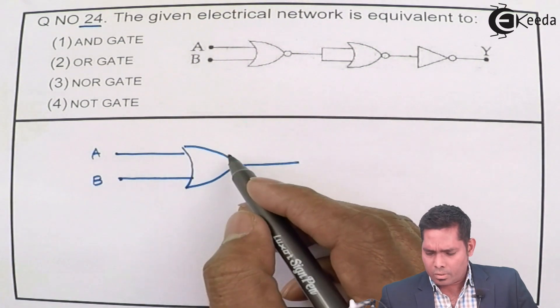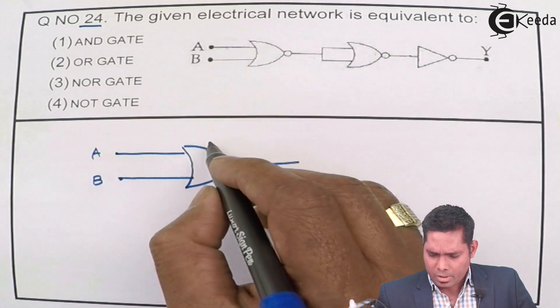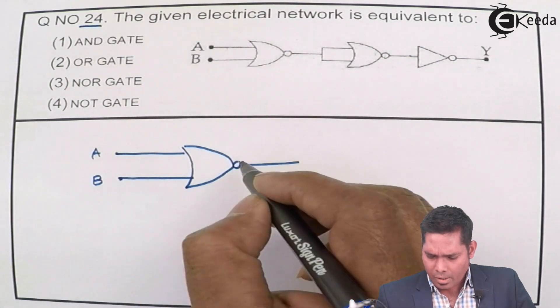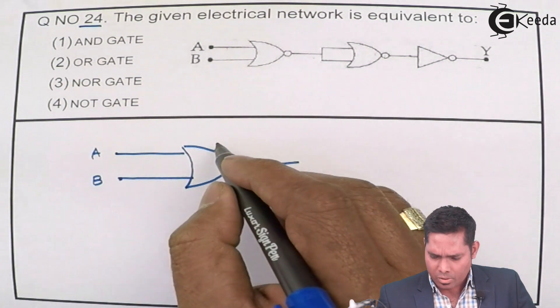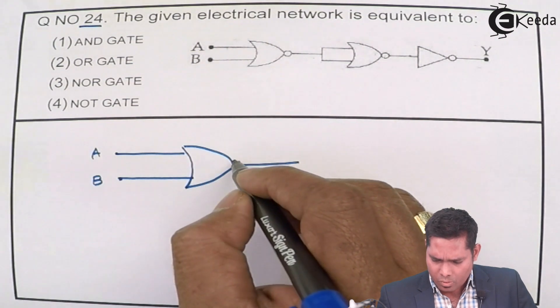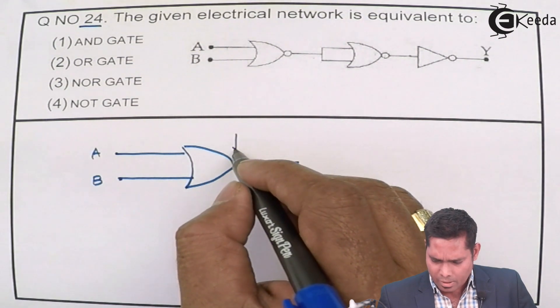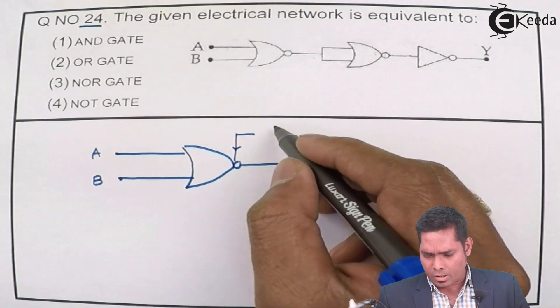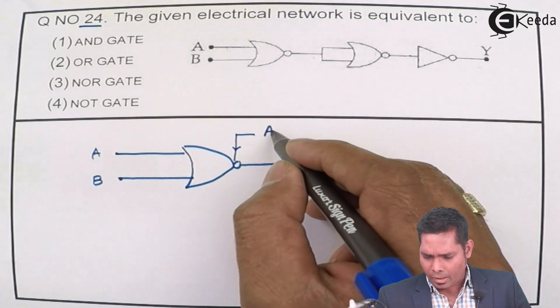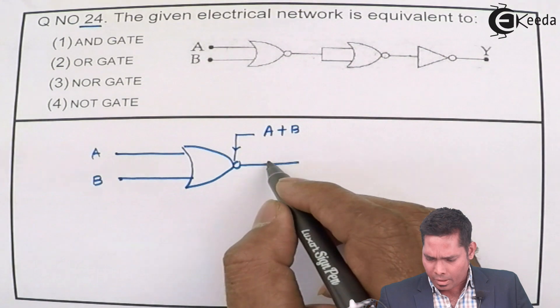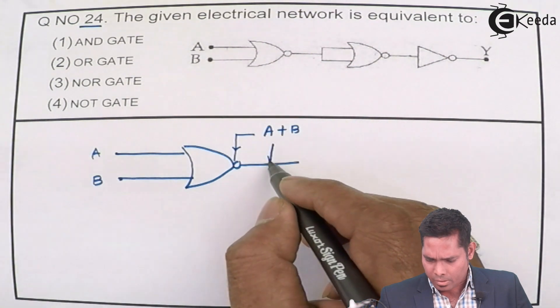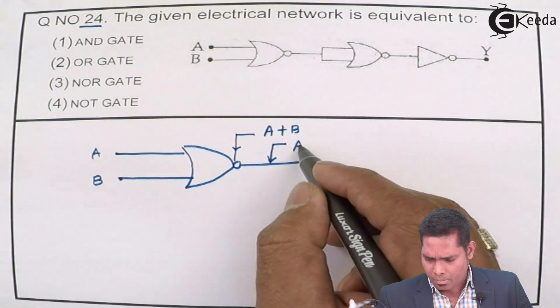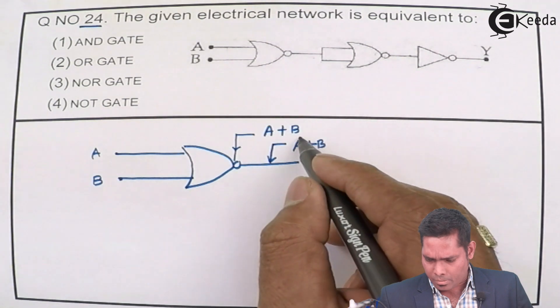This is NOT - because this is OR gate and this is NOT gate, so this is OR gate. So the input that I will get here is A plus B and here I will get A plus B bar.